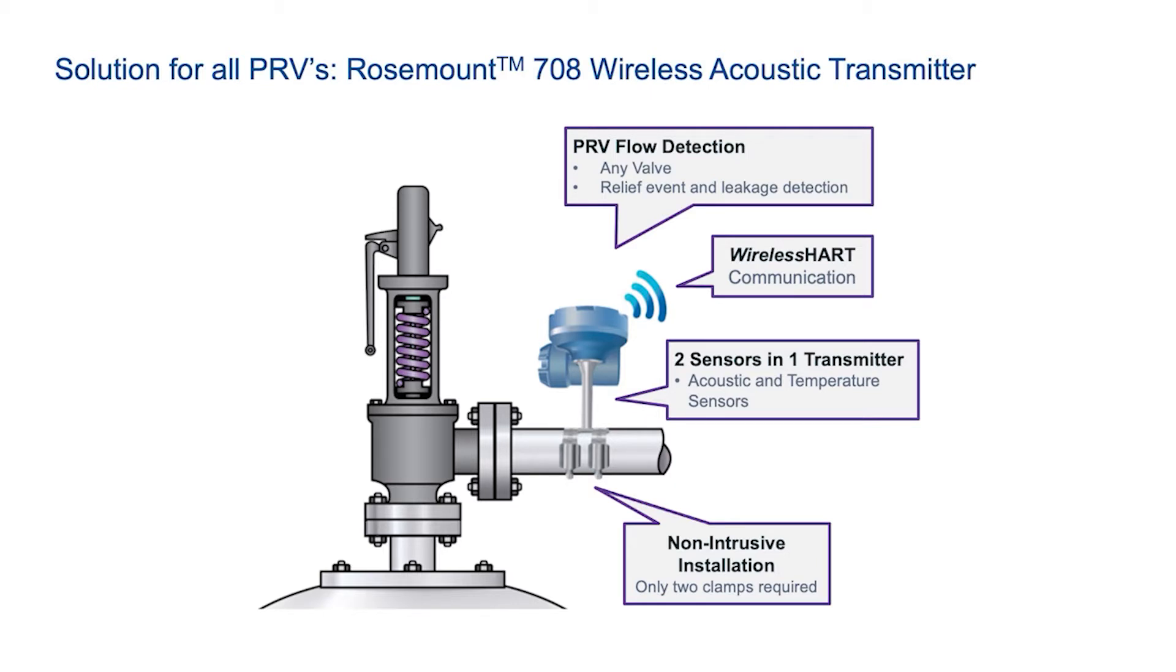The transmitter provides time stamp notification when the release is occurring and when the release has stopped. The Rosemount acoustic monitor is non-intrusive and can be directly mounted to piping without the need for cutting or changing piping and provides for a flexible and easy installation.